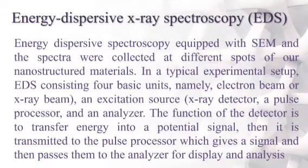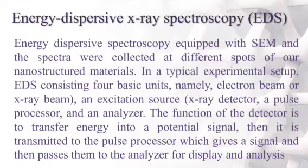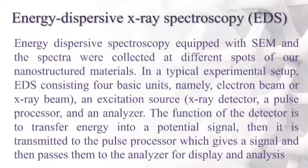Energy dispersive spectroscopy (EDS) is a common technique to identify the chemical constituents in a material, especially the presence of elements in a sample. EDS is equipped with SEM, and spectra were collected at different spots of the nanostructured materials. A typical EDS setup consists of four basic units: electron beam, excitation source, detector, and pulse processor, which sends the signal to the analyzer for display and analysis.